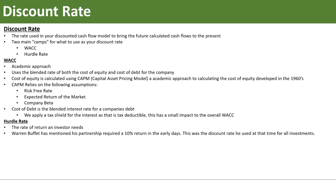The second method is the hurdle rate — it's really just the rate of return an investor needs. For example, Warren Buffett mentioned in his early partnership days he used a 10% discount rate because his fund needed to return 10% annually for his investors. So this is more about what you as an investor actually need.